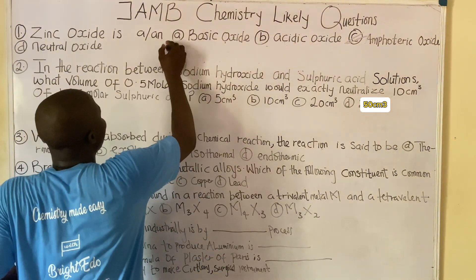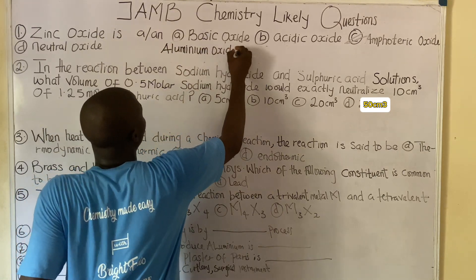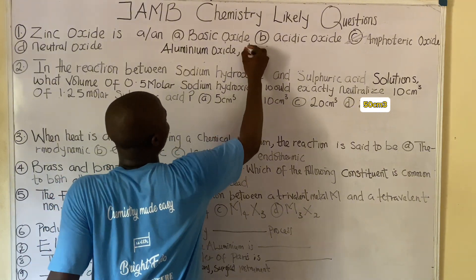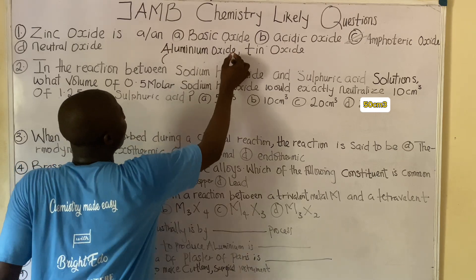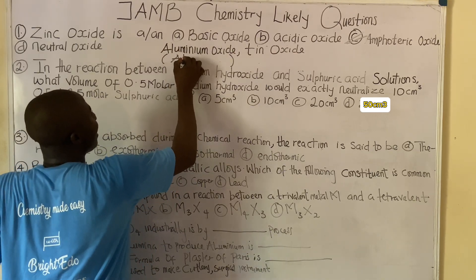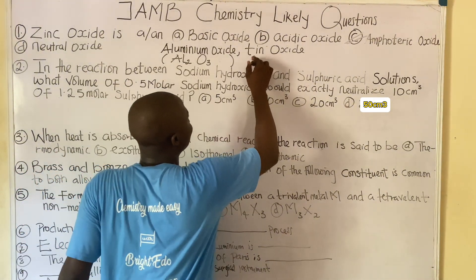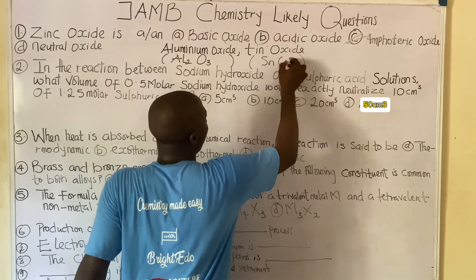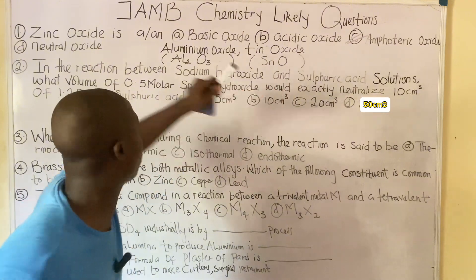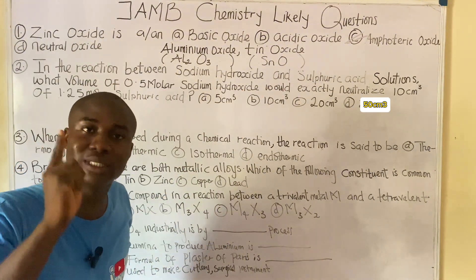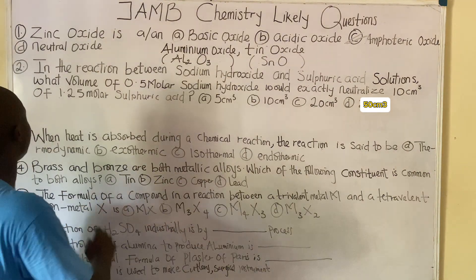Other examples of amphoteric oxides include aluminum oxide (Al₂O₃) and tin oxide (SnO). All of these, alongside zinc oxide, are common oxides that are amphoteric in nature.